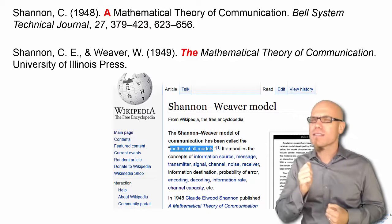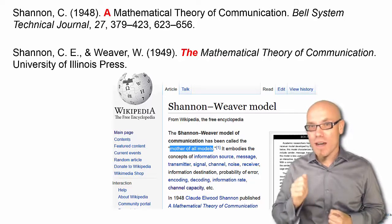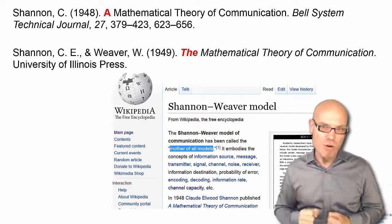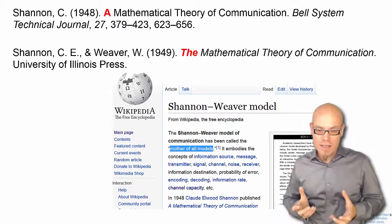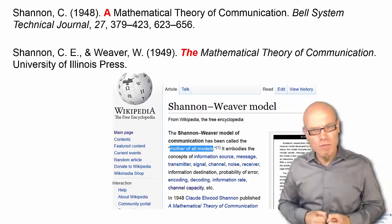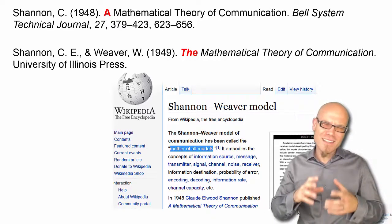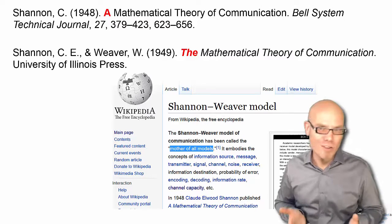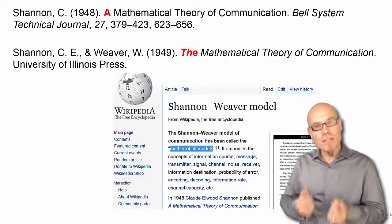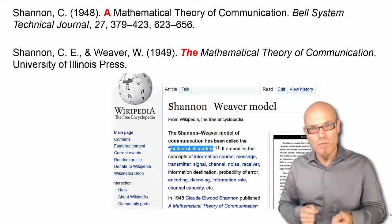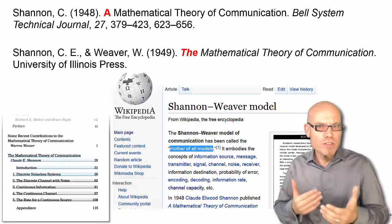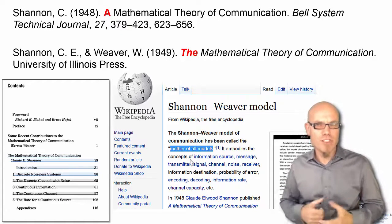Weaver was very quick in understanding when something big happened. So after Shannon published his paper, Weaver completely understood its fundamental importance, and he asked Shannon if he could take the paper and reprint it in the format of a book. Shannon had already moved on to invent the chess computer, so he said okay. Weaver took the paper, didn't change one comma, and wrote a 20-page introduction to it, then published it as a book.